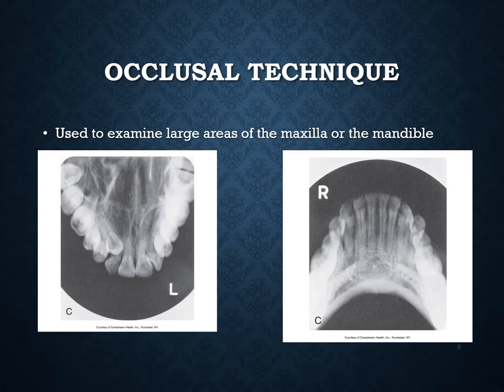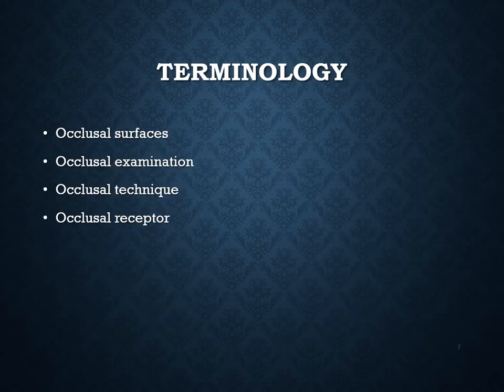The occlusal technique is used to examine large areas of the maxilla or mandible. We're definitely not going to use these for bone level or cavities — those are two big things we look for in a dental office, but not what we use the occlusal technique for. It's named the occlusal technique because of the way the patient bites down or occludes on the whole receptor.